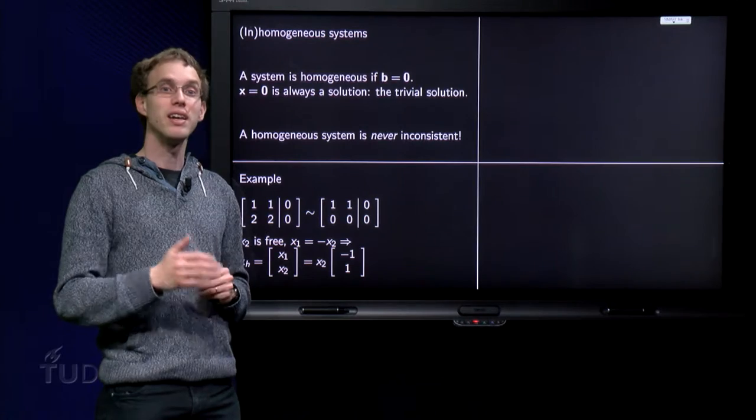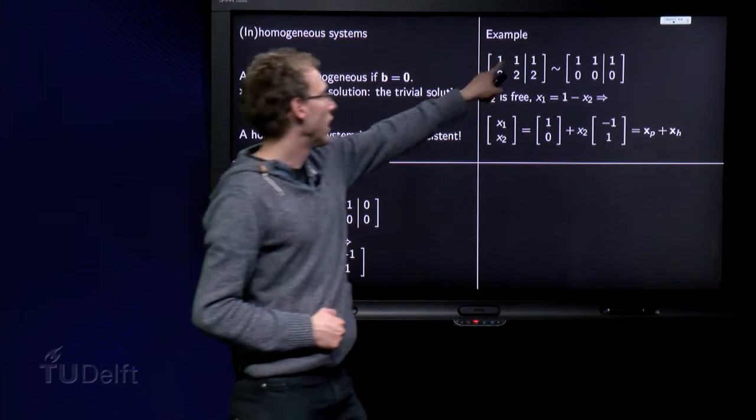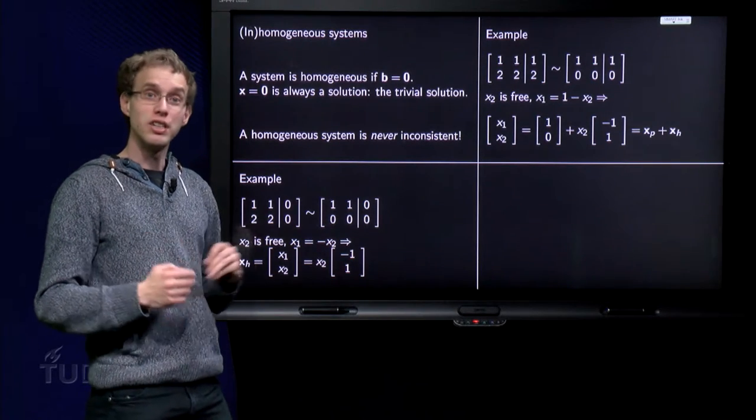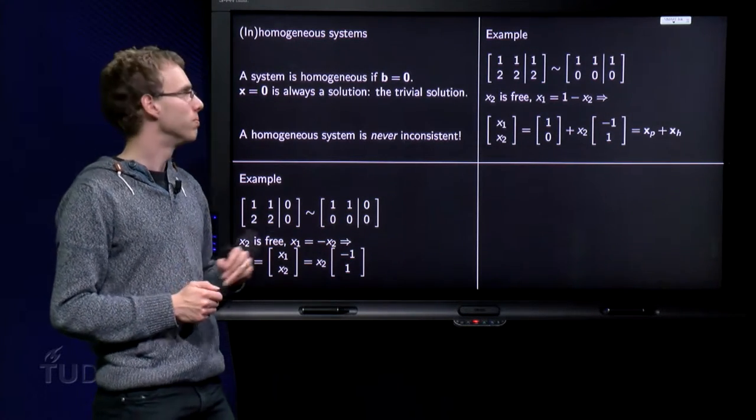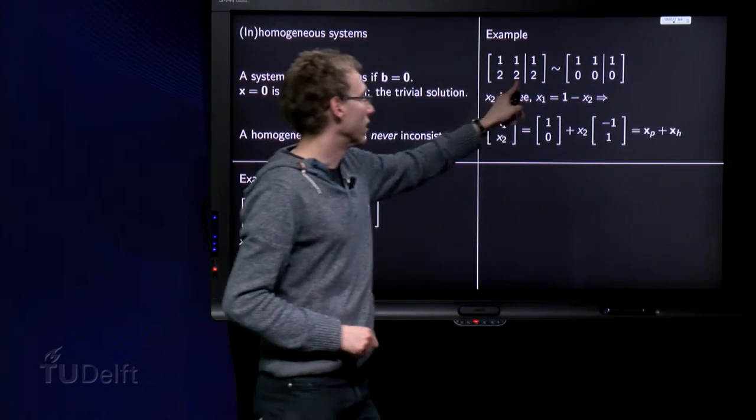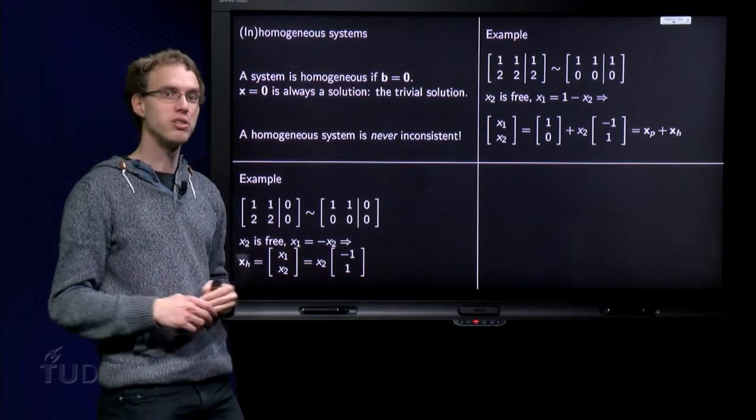Now, let us look at the inhomogeneous counterpart. So, let us add some right-hand sides. And let us see how the solution looks like. Now, we do the same reduction step. And we get a row with zeros because we chose the two over here. The system is not inconsistent.